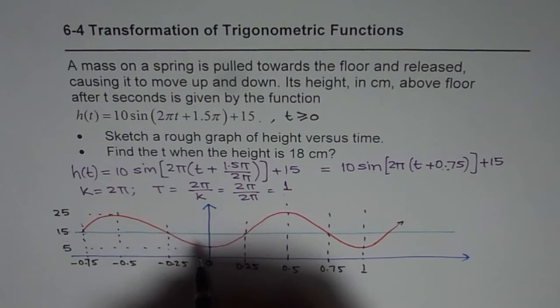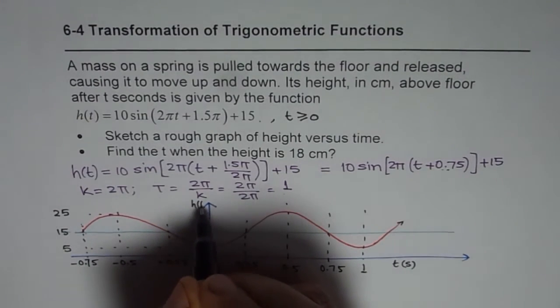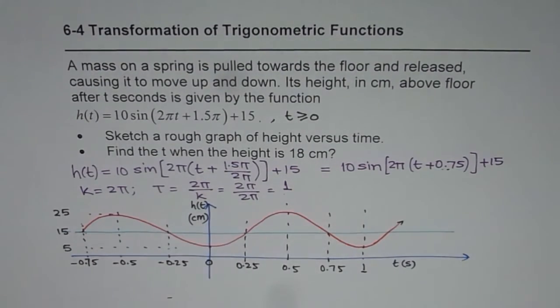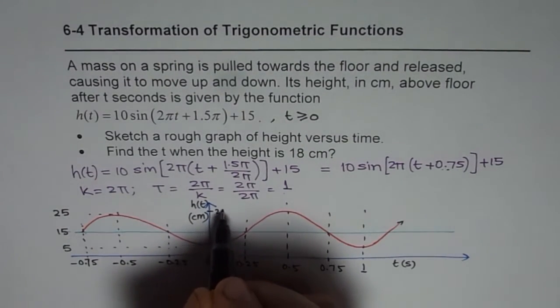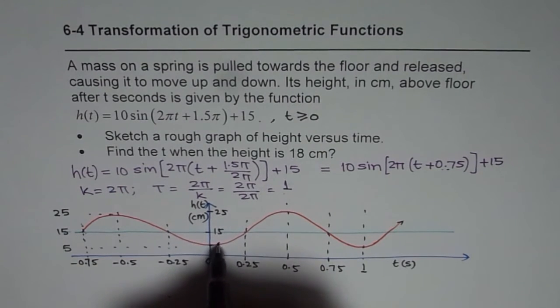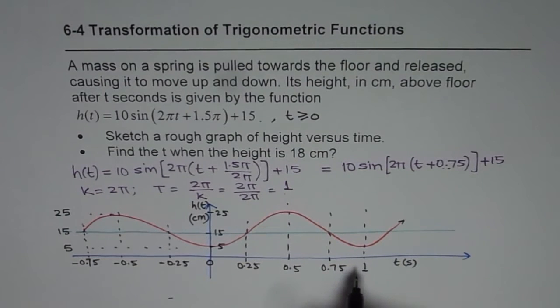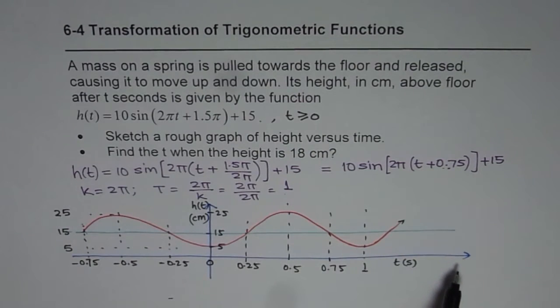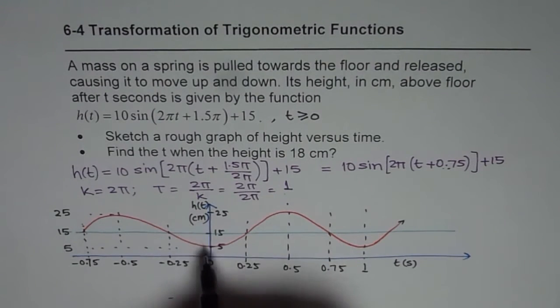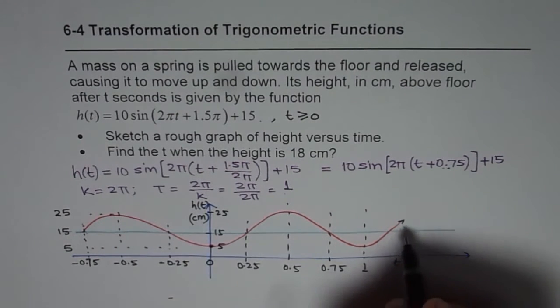So basically we are saying t is greater than 0. So this is our time in seconds. And we have h(t) here, which is in centimeters. Now this is a good representation. This point is 25. Here we have 15. And this is 5. Sketch a rough graph of height versus time - that seems to be fairly good enough. Our starting point should be from here and forward.